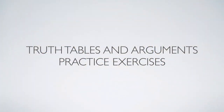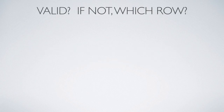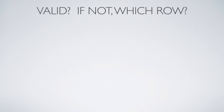Let's look at some practice exercises using truth tables to determine whether an argument is valid or invalid. An argument is invalid only when you have all true premises and a false conclusion — that's the only situation in which an argument is invalid. Otherwise it's valid. If you have all false premises and a true conclusion, it's still valid. In order to find an invalid argument, you must have all true premises and a false conclusion, and we use truth tables to determine this.